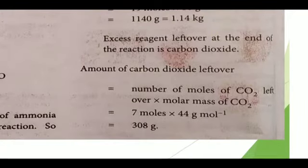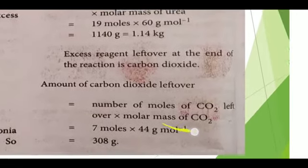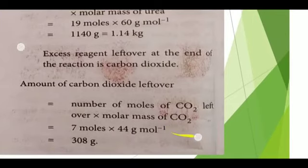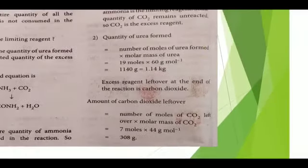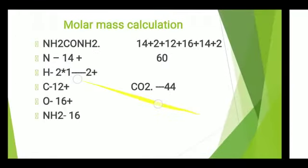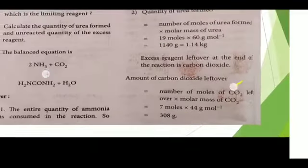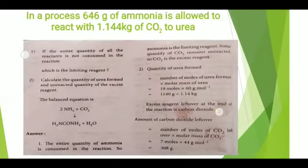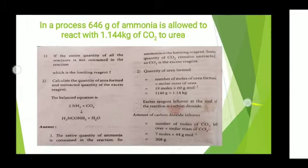Amount of carbon dioxide left over = moles of CO₂ remaining × molar mass of CO₂ = 7 moles × 44 g/mol = 308 grams. The molar mass of CO₂ is 12 + 32 = 44 g/mol. This is the method to calculate the limiting reagent, excess reagent, amount of product formed, and the amount of excess reactant left over.